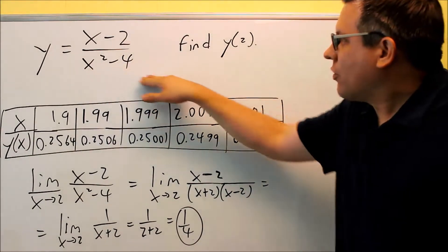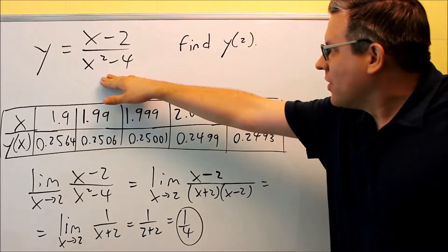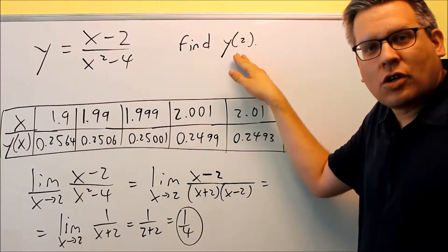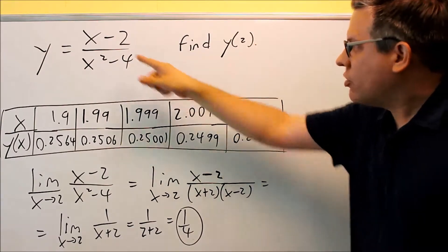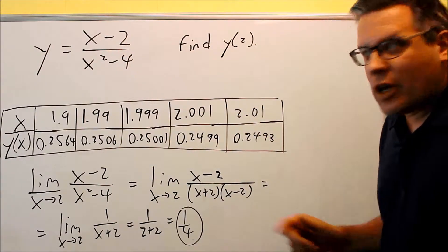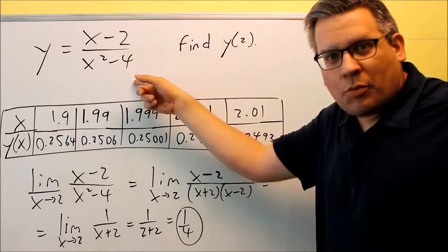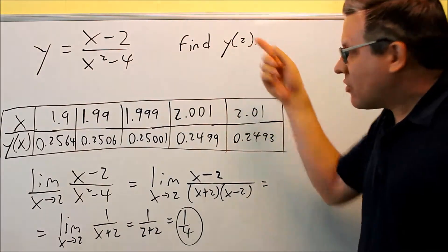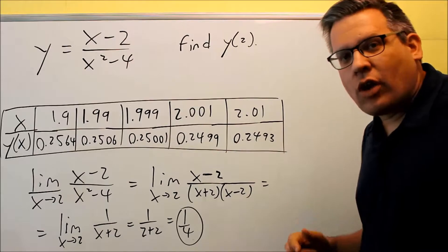So, we're starting with this function here, and let's suppose that we want to find y of 2. So we're going to put a 2 in for x. Now if we do that, we're going to get a 0 on the bottom, so at 2 itself it's going to be considered undefined. However,